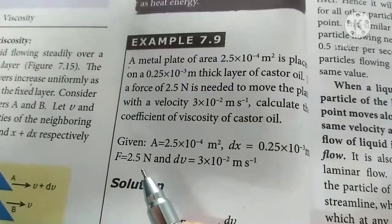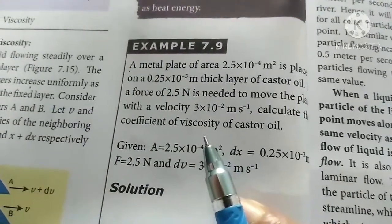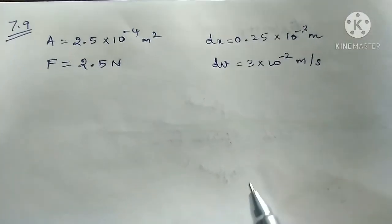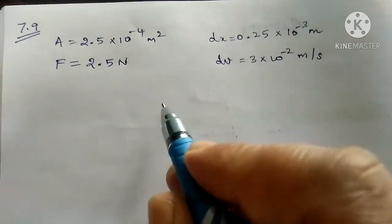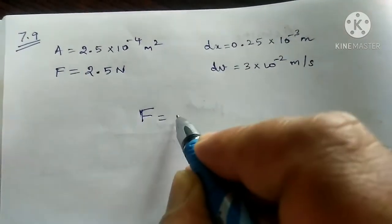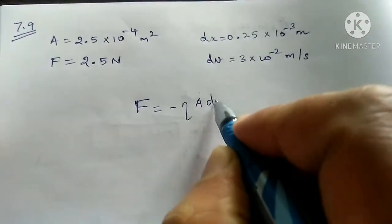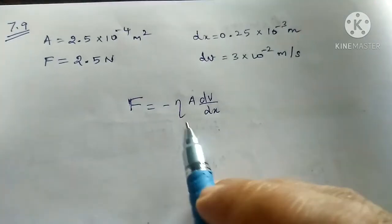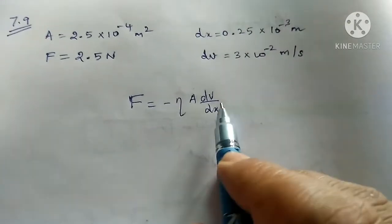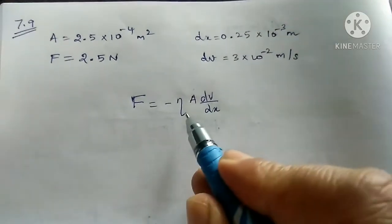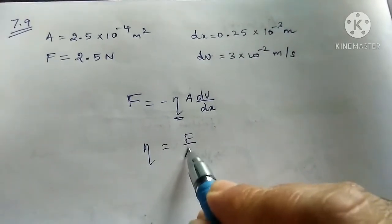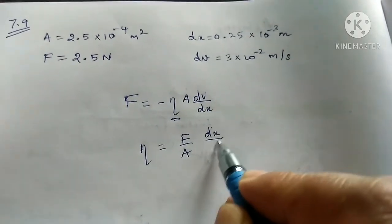A 2.5 N force is applied; calculate the viscosity of castor oil. Given data: the minus sign accounts for the force acting in the opposite direction. Rearranging the equation, η equals F divided by A times dv/dx, which is F times dx divided by A times dv.